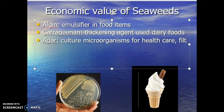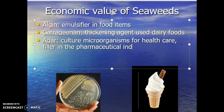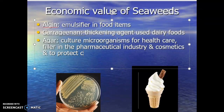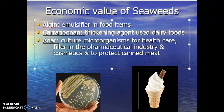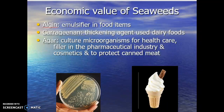We'll also use agar as a filler in the pharmaceutical industry — when various drugs are being made, they need something to thicken it. Cosmetics too: makeup, lipstick, things like that. And then also to protect canned meat. If you've ever had ham from a can, like one of the big canned hams at Christmas, there's that layer of gelatin on top of the meat — that's agar. It's used to help protect, preserve, and keep it from spoiling. So there's a lot of economic value to seaweed and the different macroalgae.